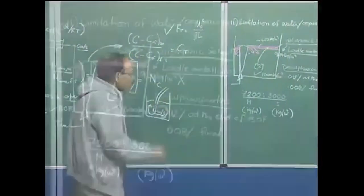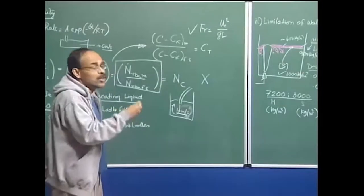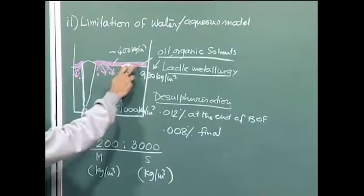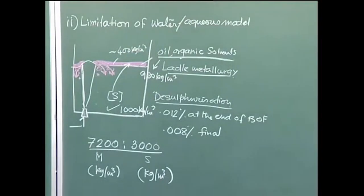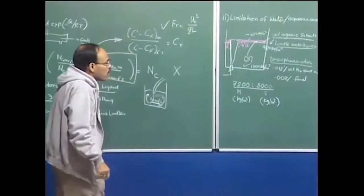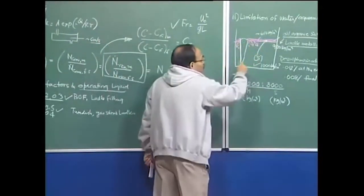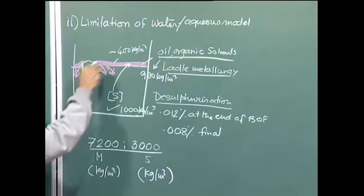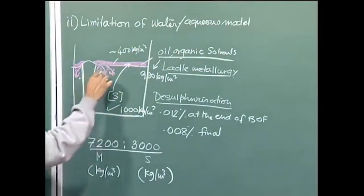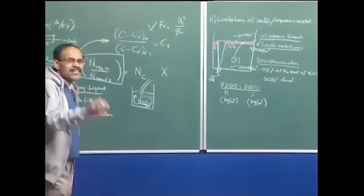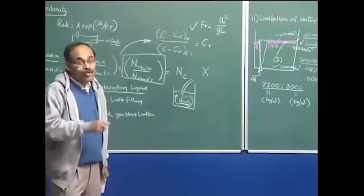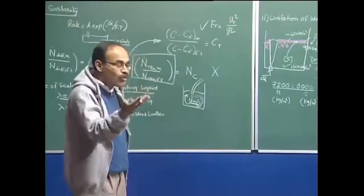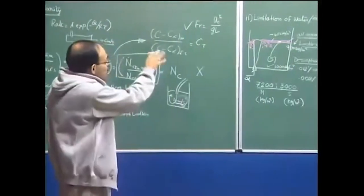However, we can get some qualitative idea. For example, it is well known that if you have a slag layer sitting on the top of a water bath or a molten steel bath, the presence of slag for a given gas flow rate will cause the liquid to recirculate at a relatively slower rate. If there is no slag the liquid circulates faster; if slag is present it circulates slower because the slag eats up part of the energy. But how much energy is eaten up in reality on a one-to-one mapping we will not be able to determine because of the mismatch of thermophysical properties.